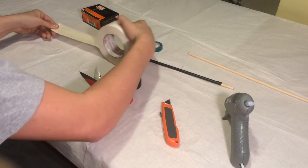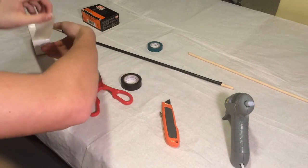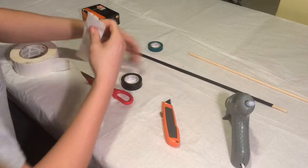Then once that's all set, you're just going to roll out a piece of duct tape about four inches long, and this is going to be the fletchings of the arrow.